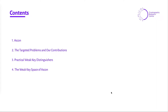Here is the outline for today's talk. First, I will give a brief description of the ASCON algorithm. Next, I will present the problems which we addressed in this work and our contributions. Then I will show some practical weak distinguishers for round-reduced ASCON and also show how to construct such a weak key space for ASCON.